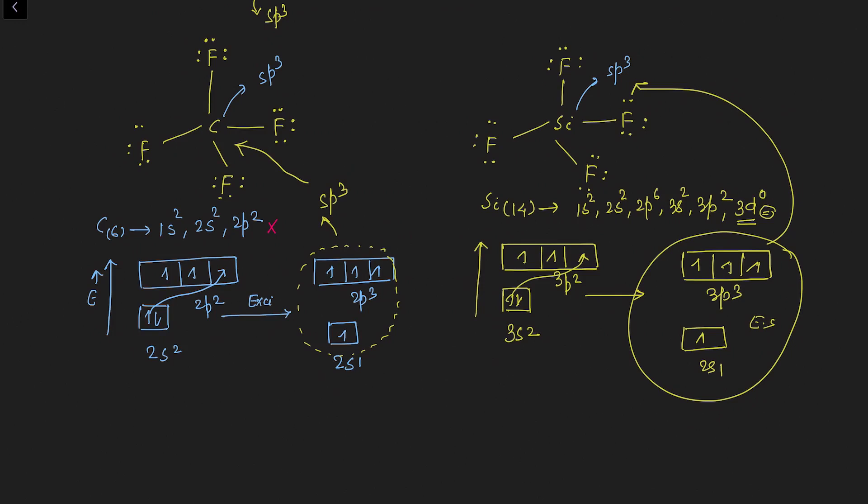The difference arises because fluorine has a very small atomic size, so fluorine is very close to silicon. In SiF₄, there is a vacant d orbital on silicon. Fluorine wants to donate its lone pair of electrons to the vacant d orbital of silicon, but there is a problem that requires careful understanding.